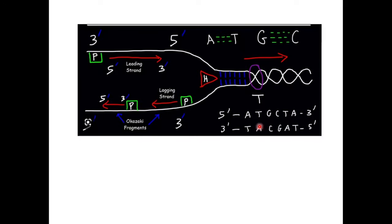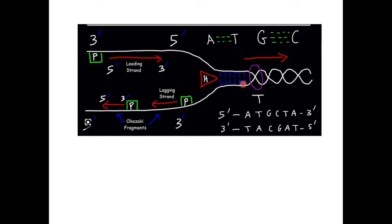Here is the replication fork — it is bidirectional. On the leading strand, synthesis is continuous from 5' to 3'. On the lagging strand, synthesis is discontinuous — it synthesizes in one direction, then after reaching a point, it turns back and starts synthesizing again, forming Okazaki fragments away from the replication fork.